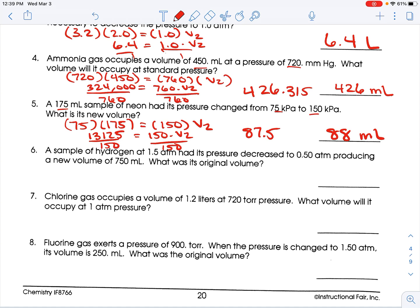A sample of hydrogen at 1.5 atmospheres had its pressure decreased to 0.5 atmospheres, producing a new volume of 750 milliliters. What was the original volume? Okay, so since they're asking for original volume, that's a V1. So, we start at 1.5, and then we have 0.5, and this is 750. So, read the question.